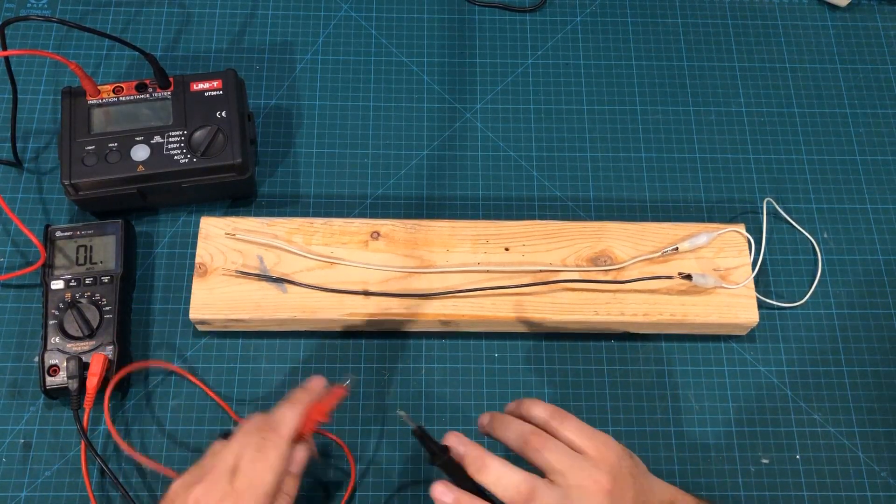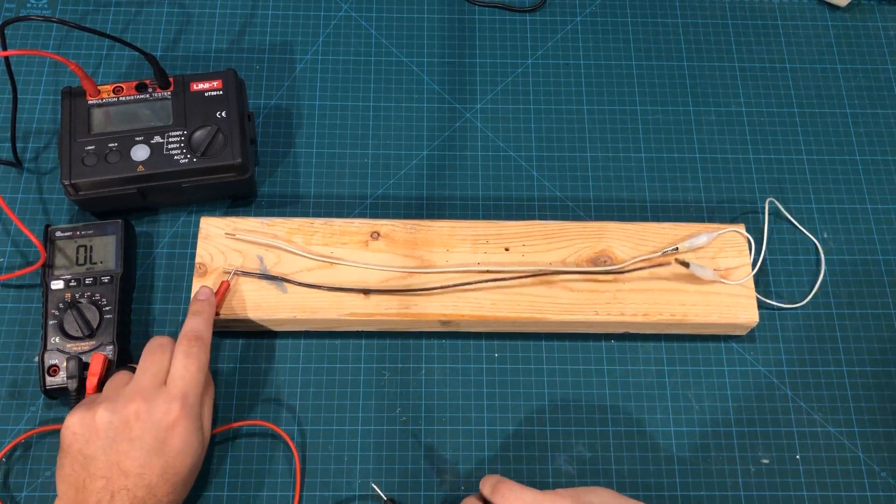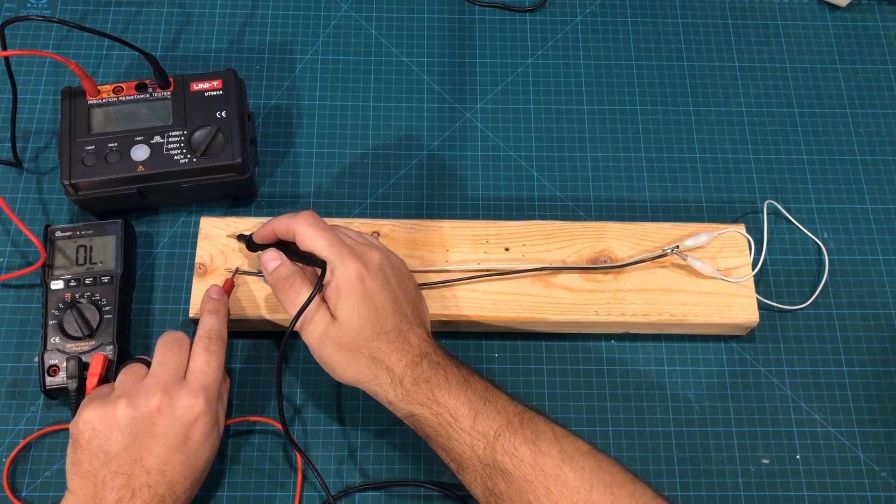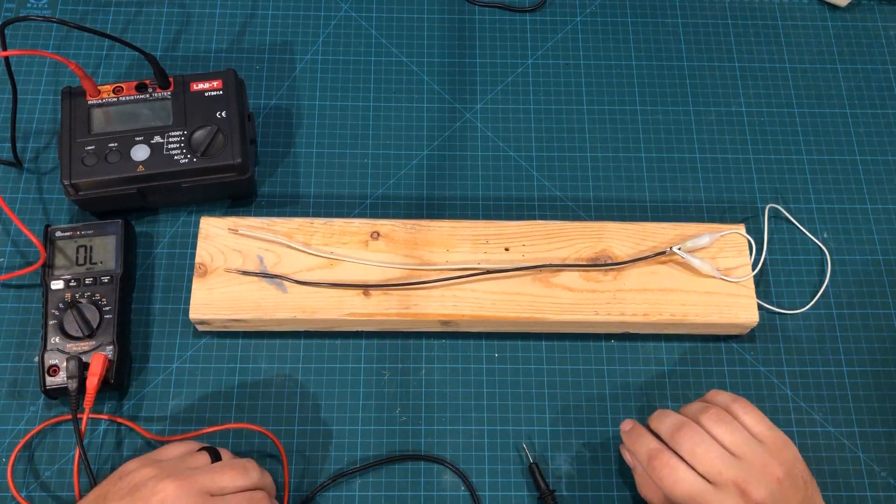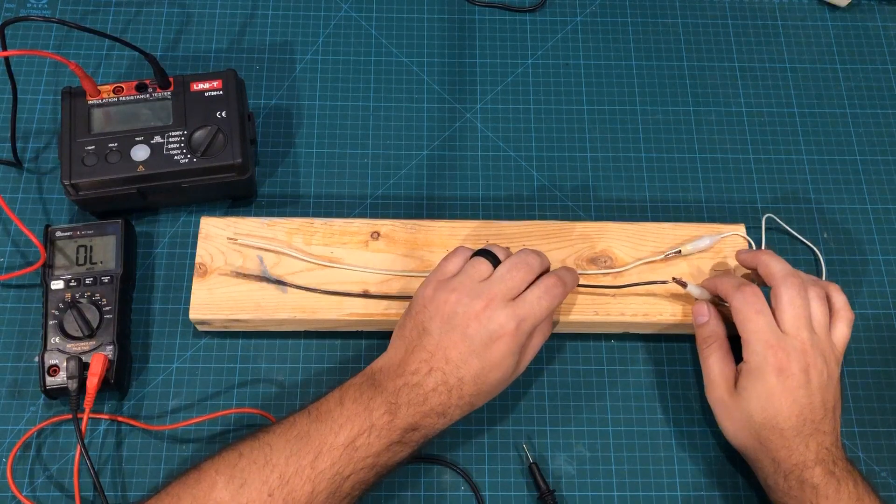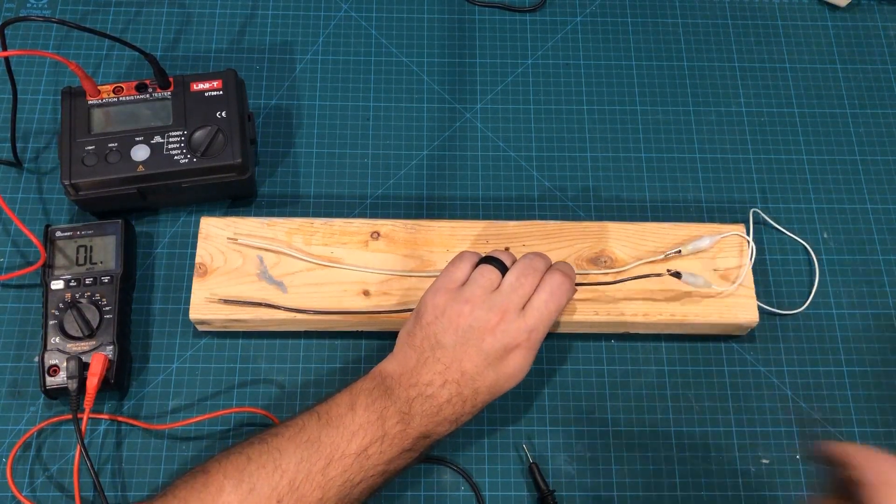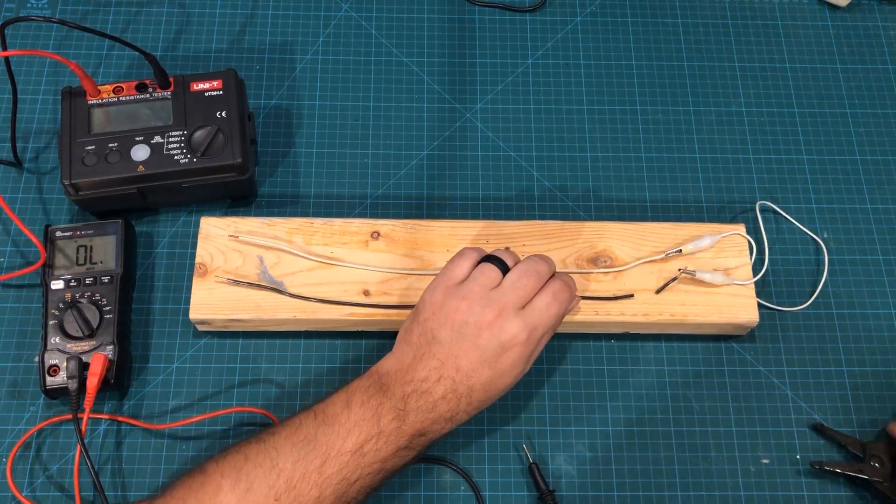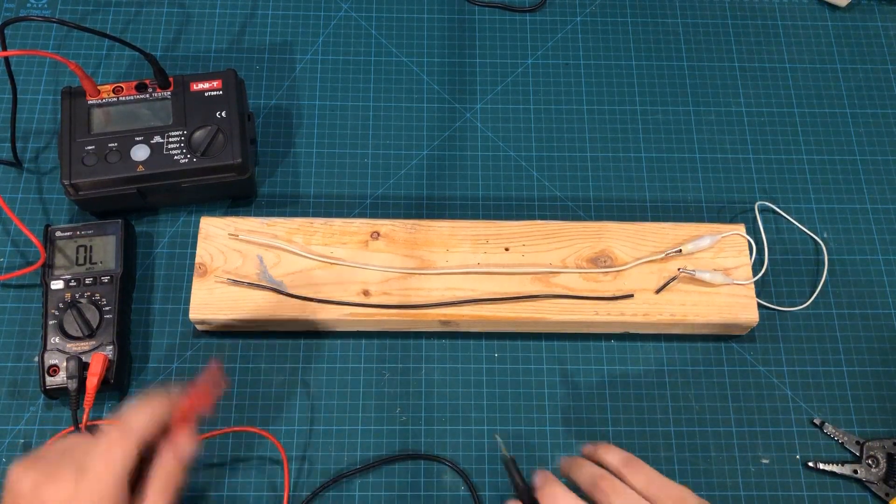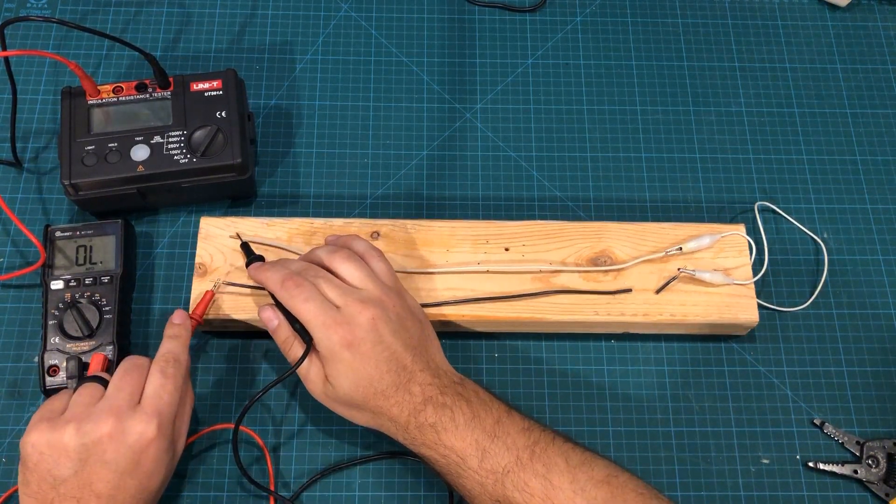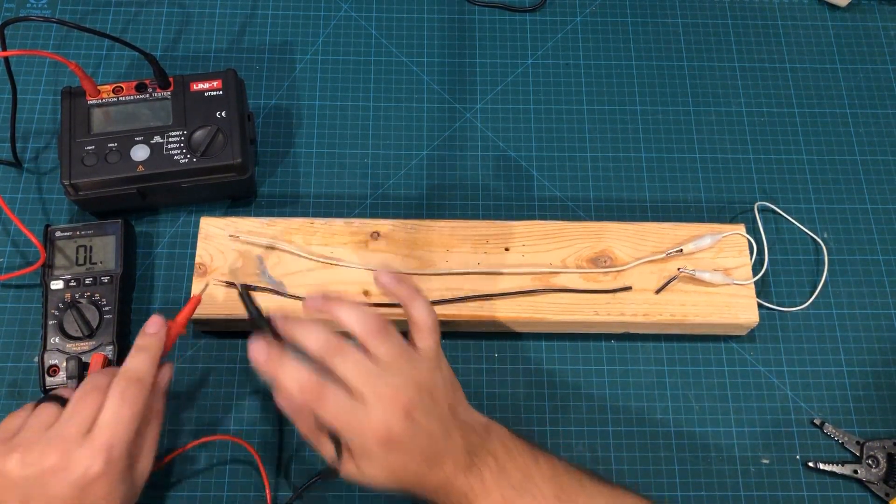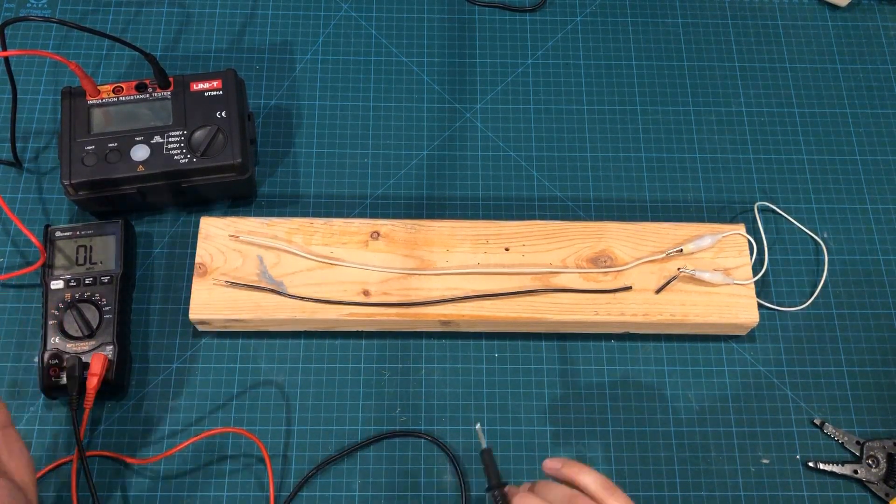I've set up my continuity tester just like before, and I'm going to do a continuity test. As you'd expect, everything works just dandy. Now imagine we have two things. Imagine this wire got cut somewhere or broken somewhere. You would do your continuity test and nothing. You'd think, okay, that's great, we know that wire is broken.